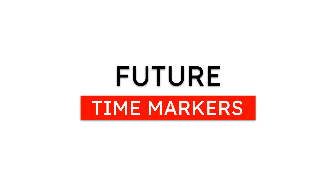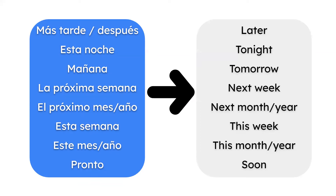To help you, here are some future time markers: más tarde (later), después (later), esta noche (tonight), mañana (tomorrow), la próxima semana (next week), el próximo mes (next month), el próximo año (next year), and pronto (soon). Remember, whenever we have these time markers in the sentence, you know that we need to use the future with voy a rather than estoy + -ando or -yendo.